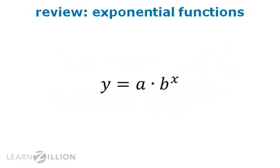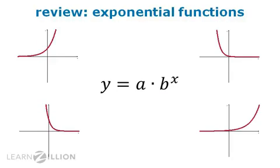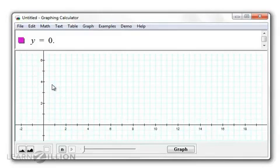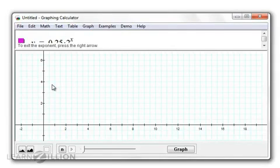You already know that exponential functions have equations of the form y equals a times b to the x, and that the graphs of exponential functions look like these. We're going to see the graph of 0.25 times 2 to the x power.